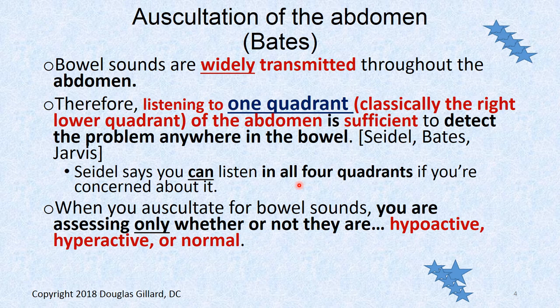When you auscultate the abdomen, just put the diaphragm down — I like the right lower quadrant. You don't have to do all four quadrants. Seidel is the only one who even mentions it; the other board books say you don't need to.